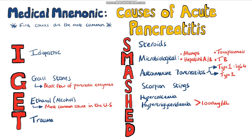E in the traditional mnemonic is for ERCP, a surgical procedure that is used to explore the biliary ducts. However, E also stands for emboli that can lead to ischemia of the pancreas, and of course, since it's on this list, acute pancreatitis.